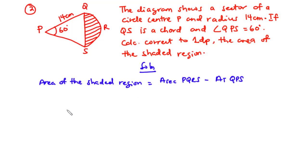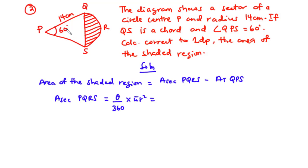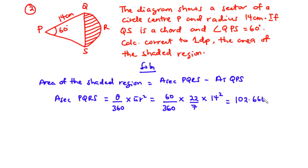The area of sector PQRS equals theta divided by 360 times pi r squared. With the angle being 60 degrees, we have 60 over 360 times 22 over 7 times 14 squared. Simplifying this gives us 102.6667 centimeters squared. The sector is a part of the circle dependent on the angle between the two radii PQ and PS.